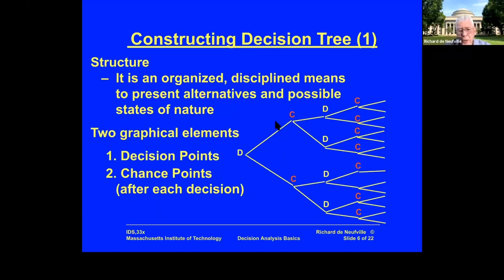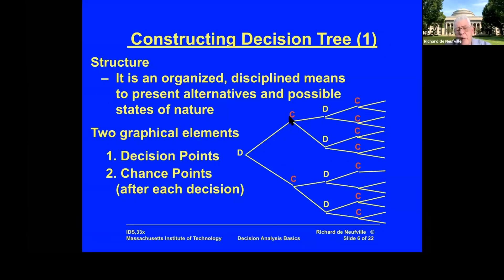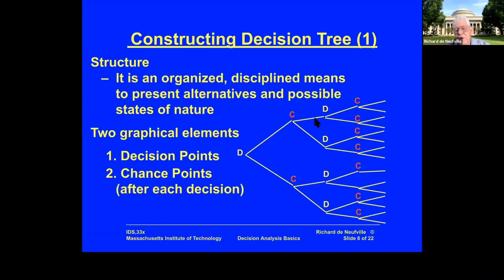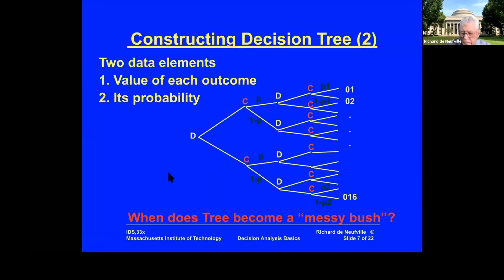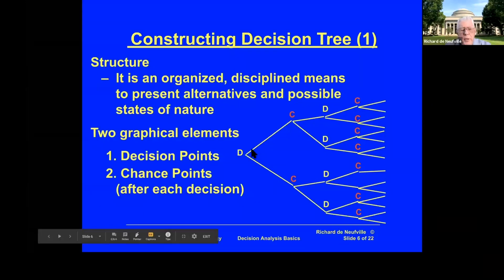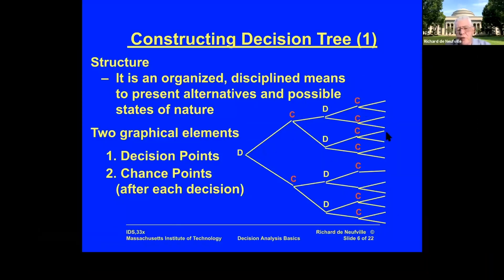For each choice — typically known as a branch — you have possible outcomes that lead you to another decision point. I built this plant and it was a success: now do I build more or stay put? Or I built this plant and it was a failure: do I sell it or renovate it? So the sequence is decision, chance, decision, chance — that's the basic structure.